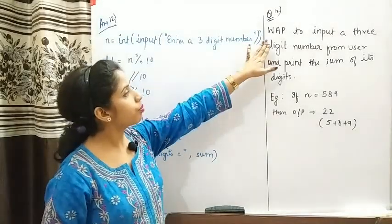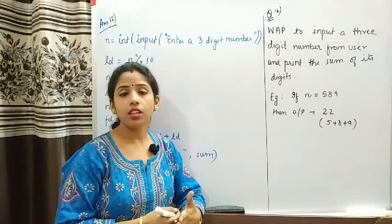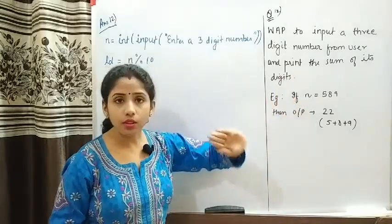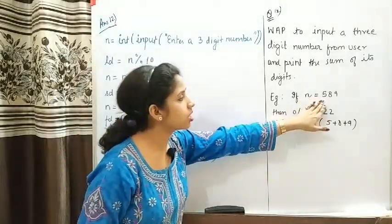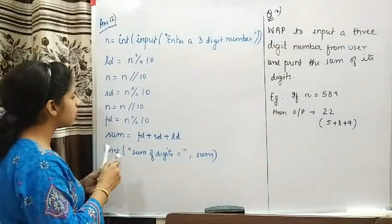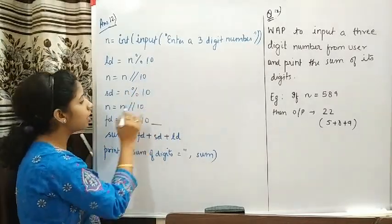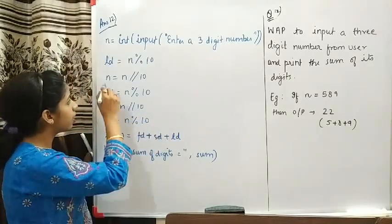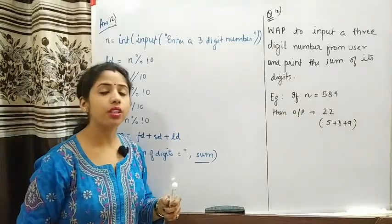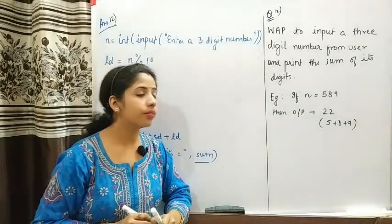The next question is: write a program to input a three-digit number from the user and print the sum of its digits. In the last question we saw how to extract the digits. Now instead of printing them directly, we add those digits and print the result as the sum. For example, 5 + 8 + 9 equals 22. The logic for extraction is exactly the same — we get fd, sd, and ld, and then add all three to get the sum.